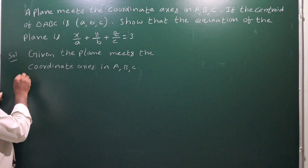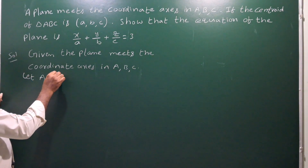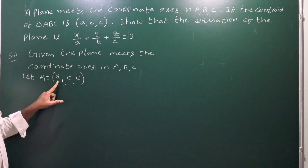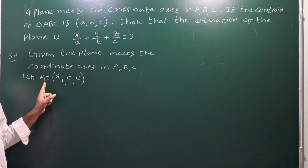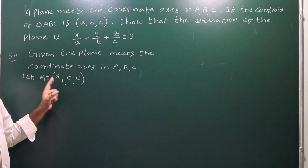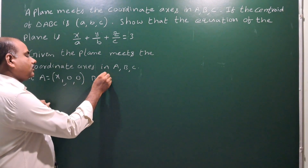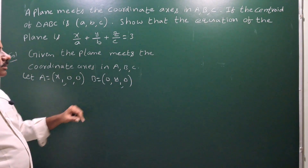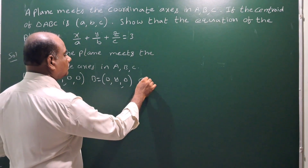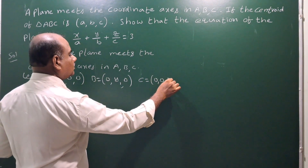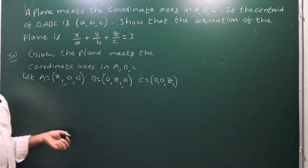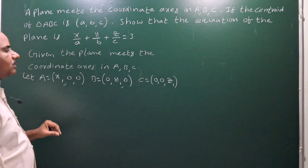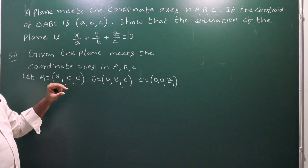Let A = (x1, 0, 0), where x1 is the x-intercept — the plane meets the x-axis at A. Next, B = (0, y1, 0), where y1 is the y-intercept. And C = (0, 0, z1), where z1 is the z-intercept. So we have the three points A, B, C defined with their respective intercepts.